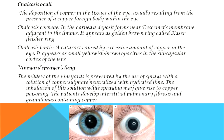Vineyard sprayer's lung: workers used to spray Bordeaux solution — a 1 to 2 percent copper sulfate solution with lime — on vineyards. Those workers got chronically exposed to this copper sulfate mixture and slowly developed chronic copper poisoning. The symptoms included interstitial pulmonary fibrosis and granulomas containing copper.